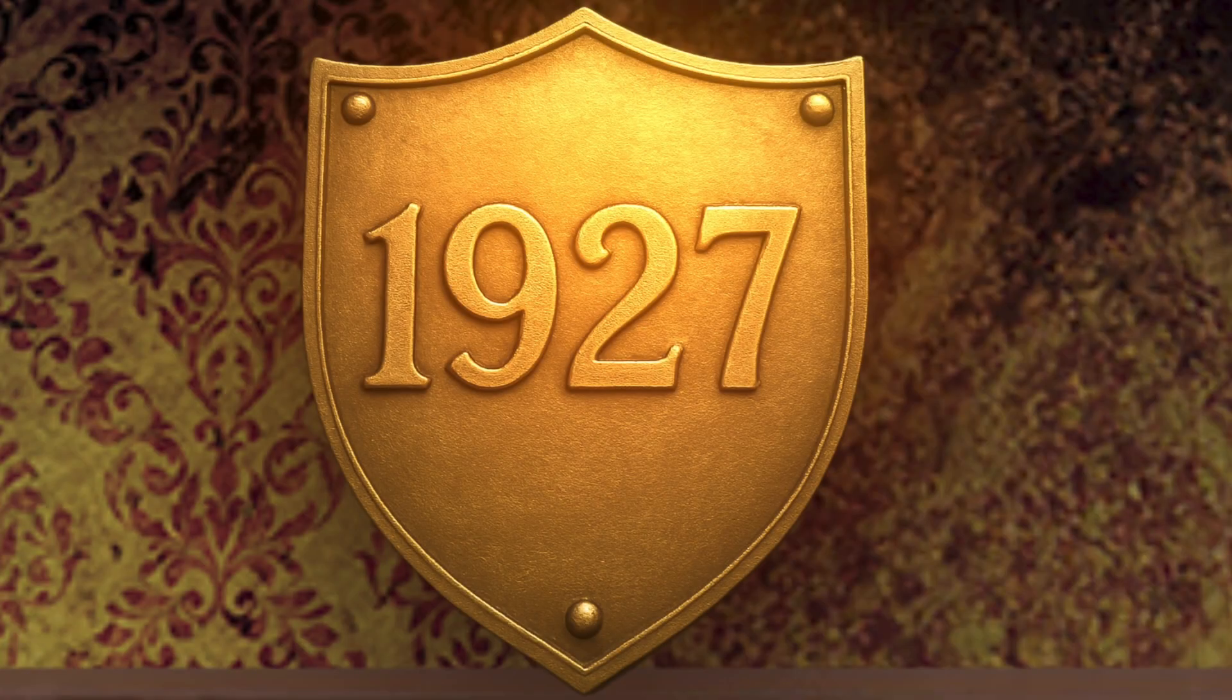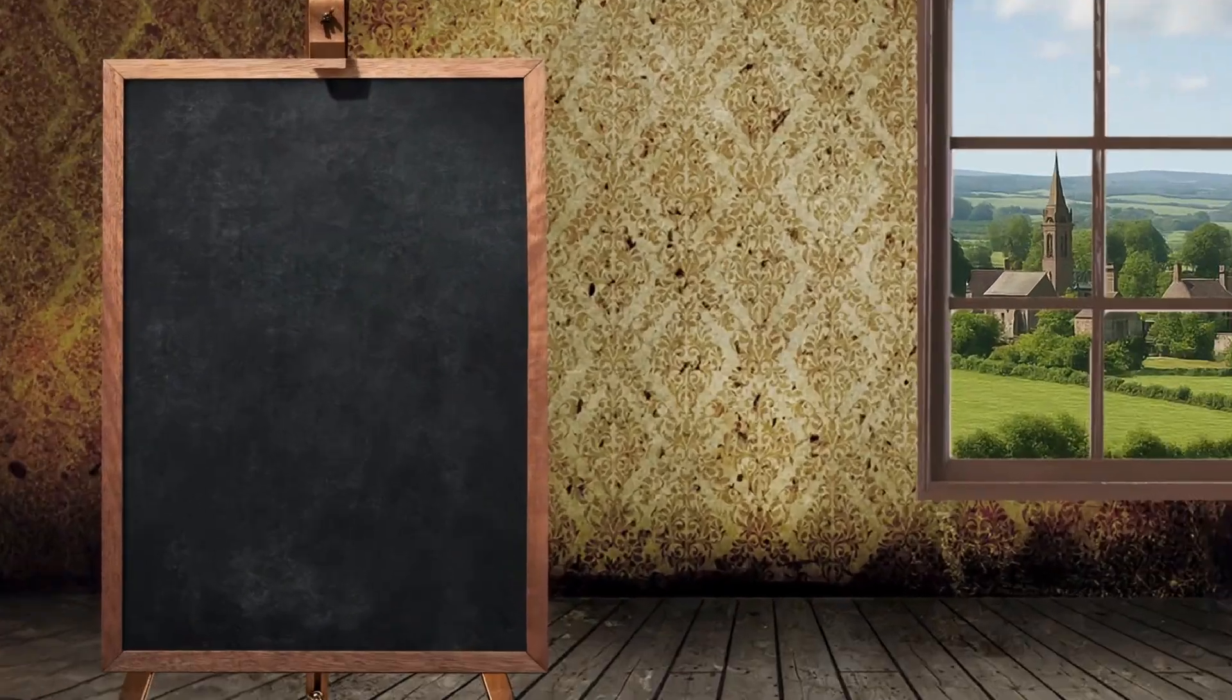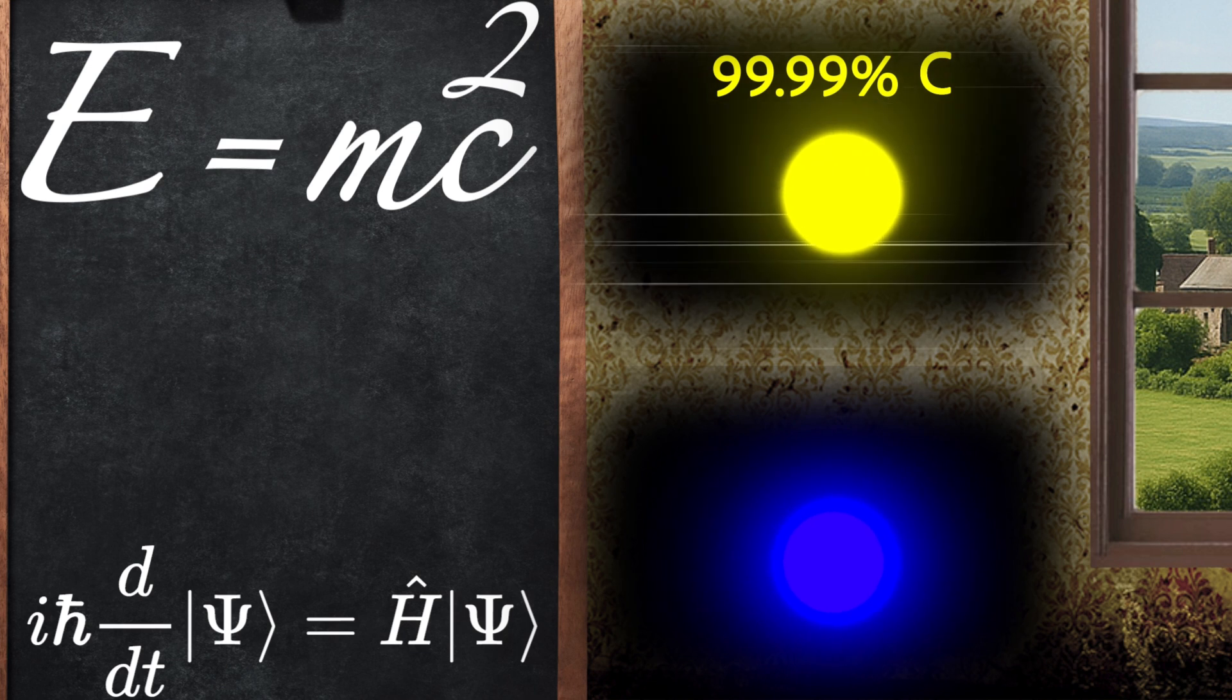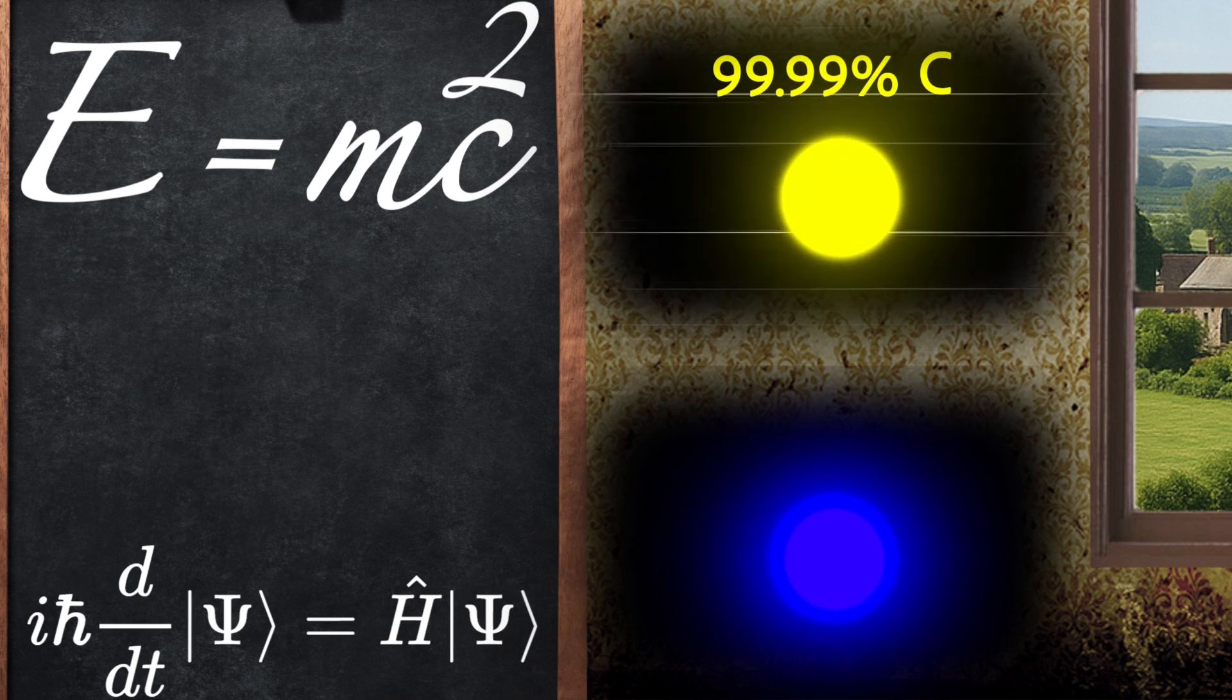It's 1927. We had Einstein's equations to understand how objects behave when moving at nearly the speed of light, and quantum mechanics to explain how very tiny objects like electrons behave. But there was a problem. Quantum mechanics didn't work at high speeds.